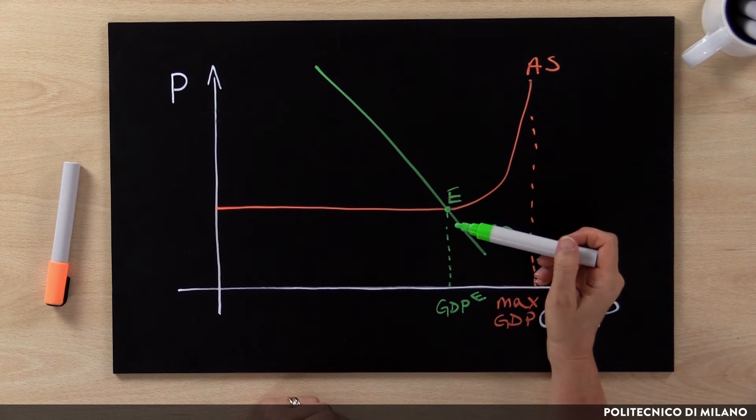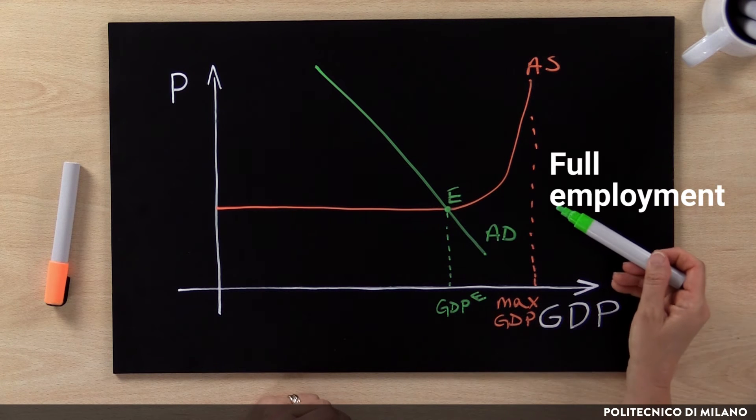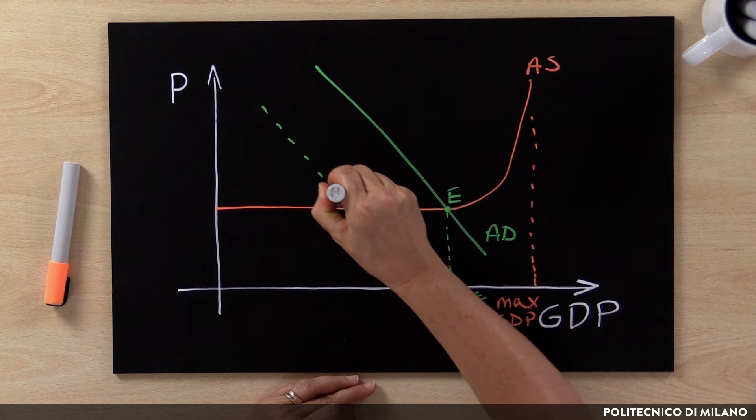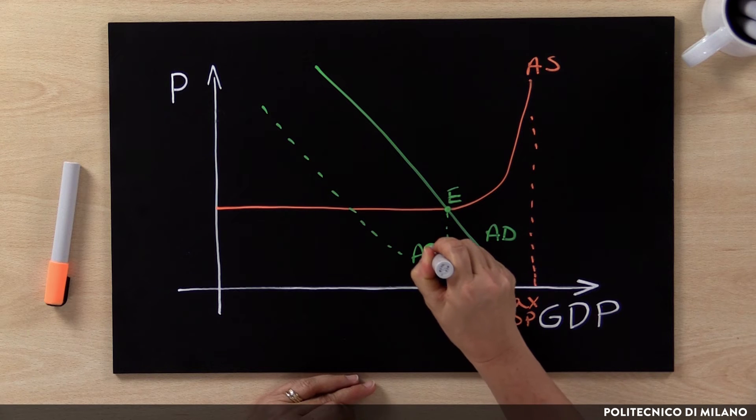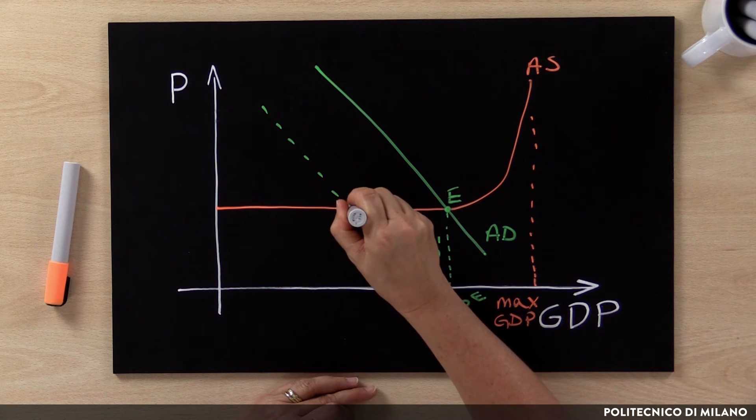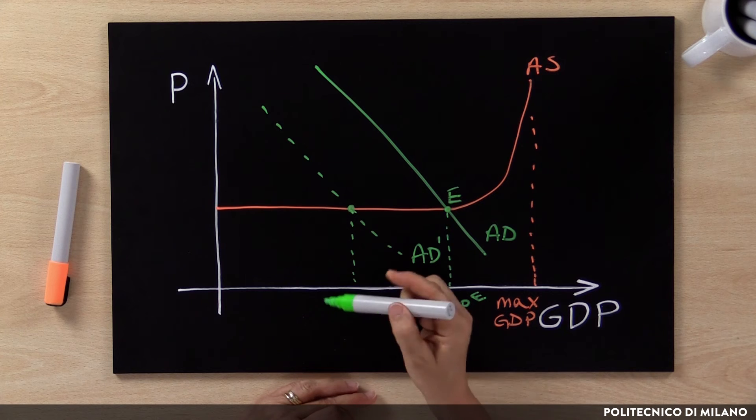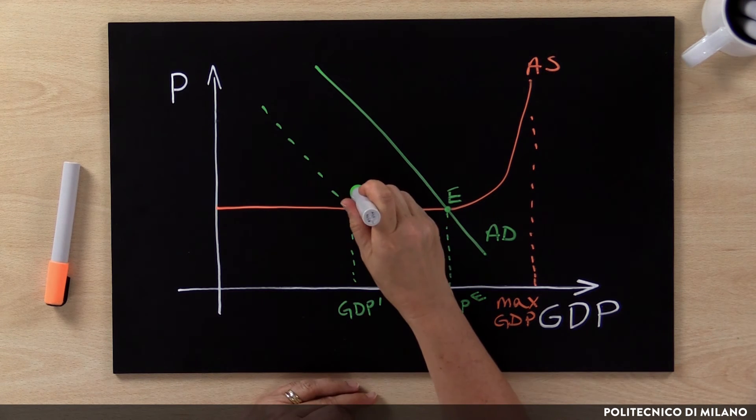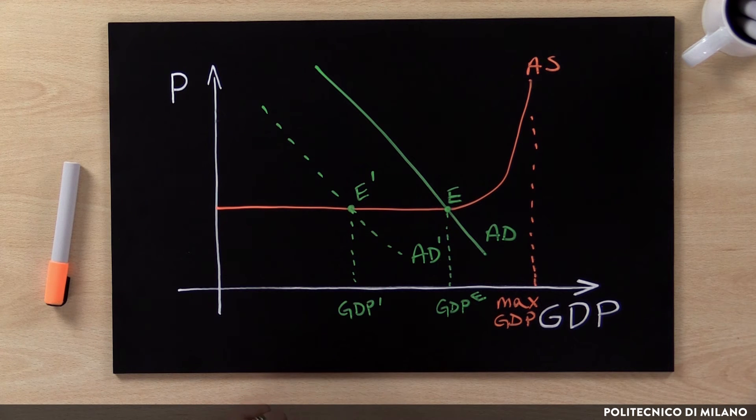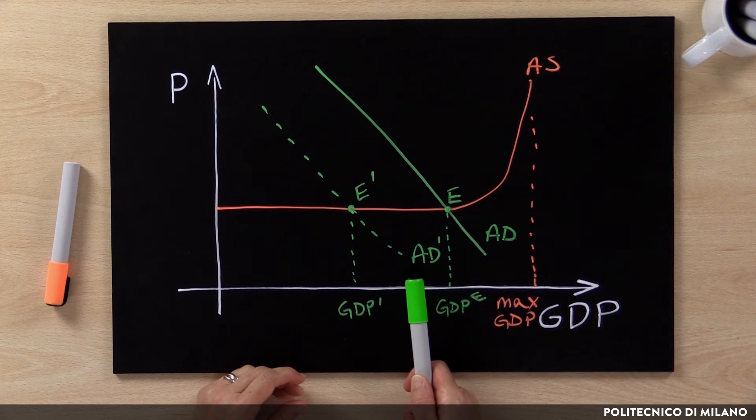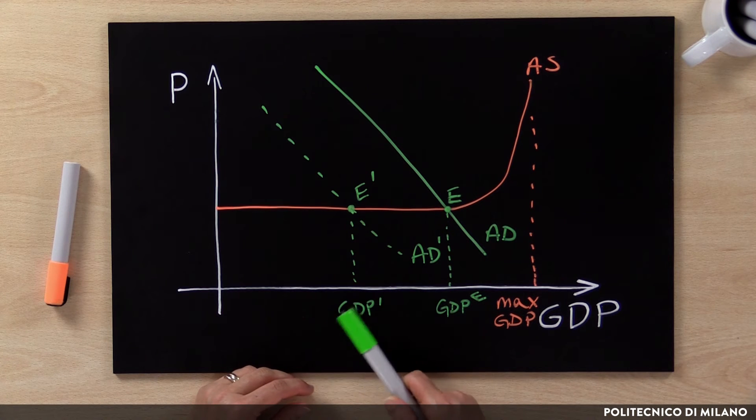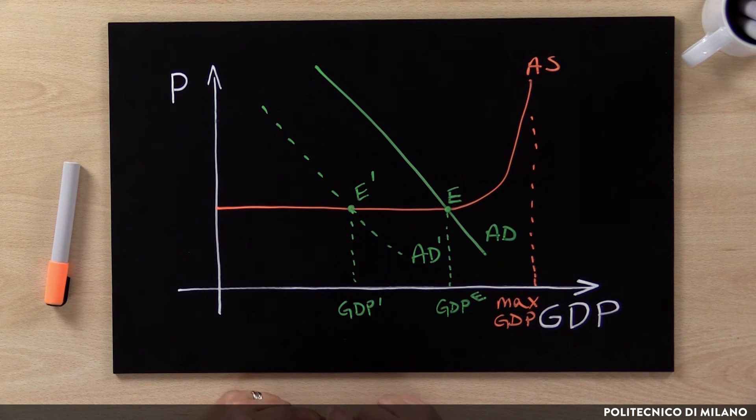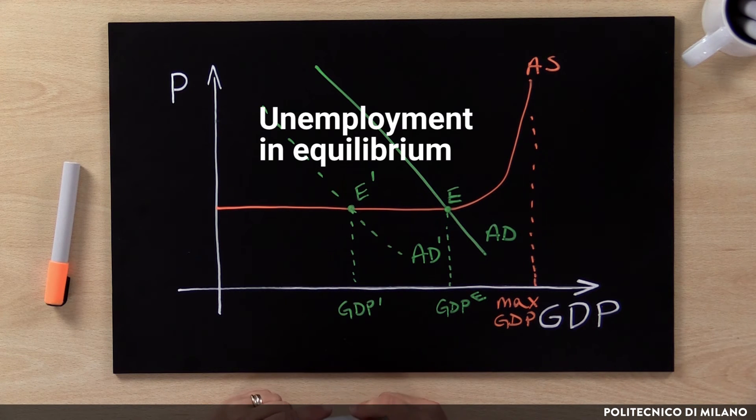The equilibrium can be a good one, very close to full employment of all factors of production, or a bad one. We can have an equilibrium with a low level of aggregate demand that creates a GDP level which is very far away from full employment. In this type of equilibrium, what we observe is that the level of demand is low, firms react by producing less than in full employment, and this is an equilibrium where we observe not full use of available factors.